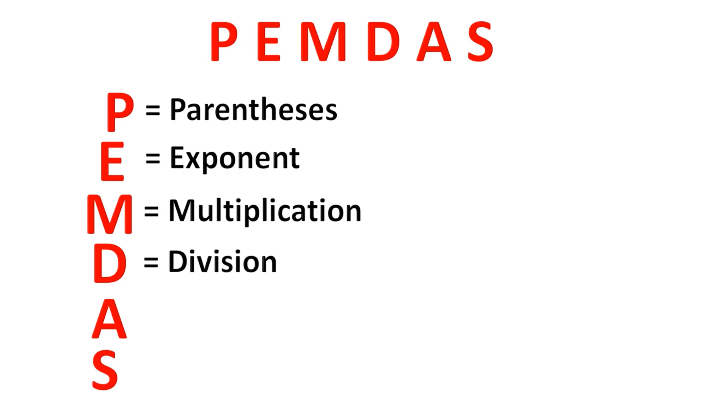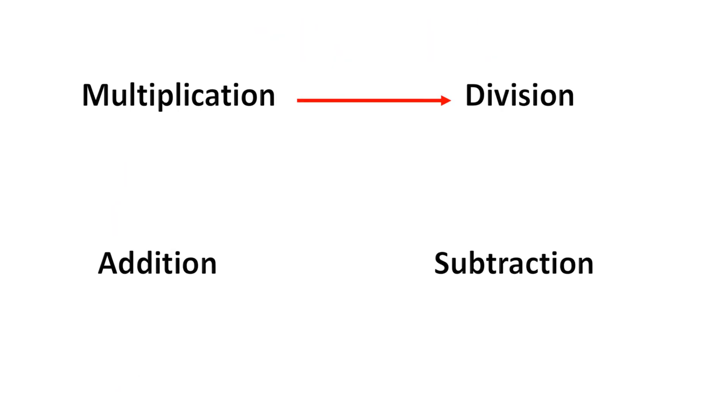First we have to do parentheses, then exponents, then multiplication or division, and finally addition or subtraction. Remember that multiplication and division have equal priority and we have to work from left to right, and the same applies to addition and subtraction here.